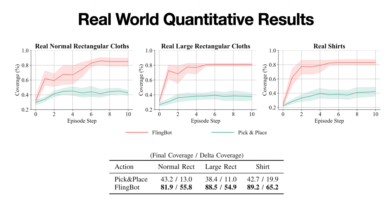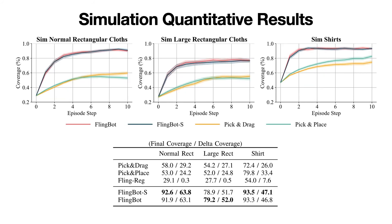Quantitatively, FlingBot is not only more efficient, but also reaches coverages that are not reachable by the quasi-static baselines even with many more interaction steps. In simulation, we compare against two quasi-static baselines — pick-and-drag and pick-and-place. FlingBot reaches over 80% coverage within three steps on normal rectangular cloths, while the baseline plateaus at around 60%. We also include a variant called FlingBot S, which learns the fling speed, but it is not much better than FlingBot, so we prefer the simpler version.